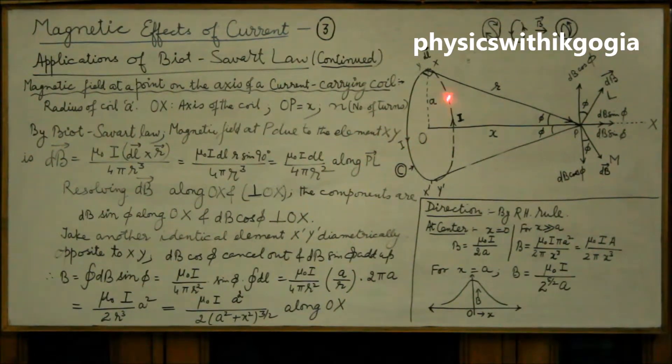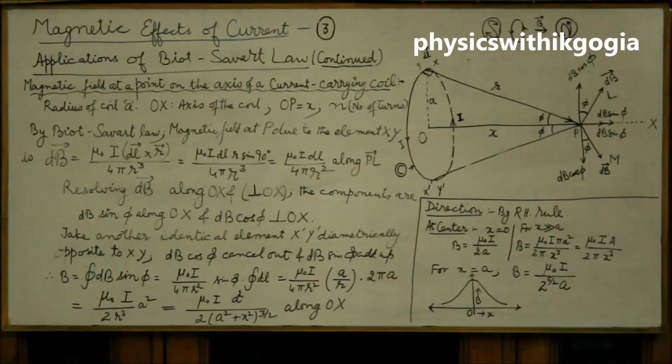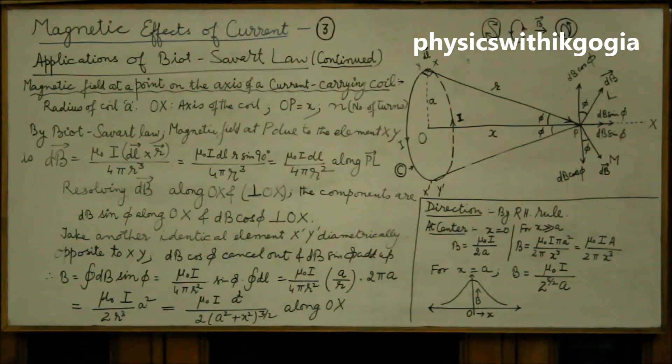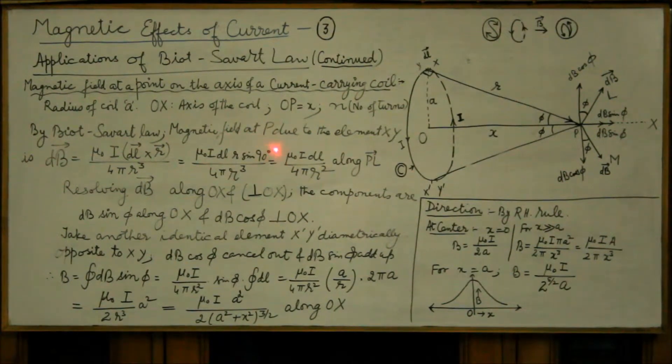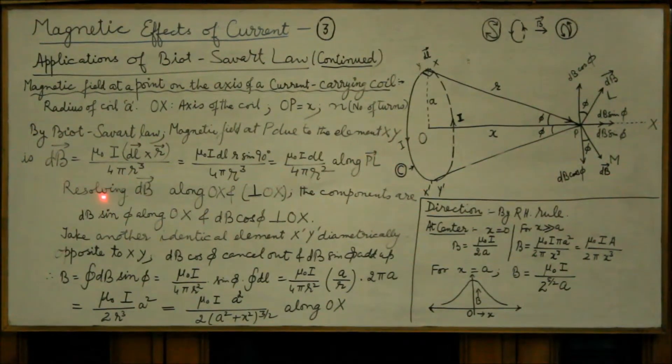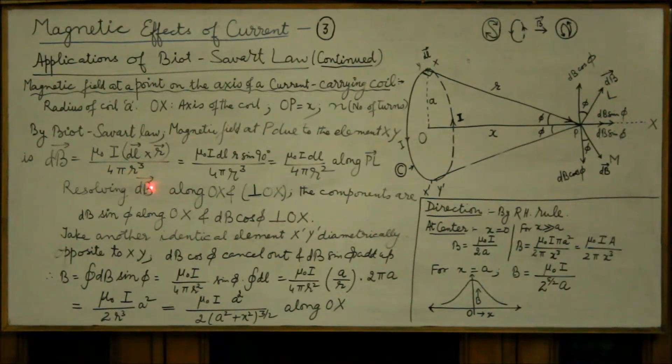Using Biot-Savart law, we take a small element XY here of this coil, the length of the element is dL and obviously it is carrying a current which we have denoted by I. By Biot-Savart law, the magnetic field at P due to this small element XY is given by μ₀ i dL cross r over 4π r³.